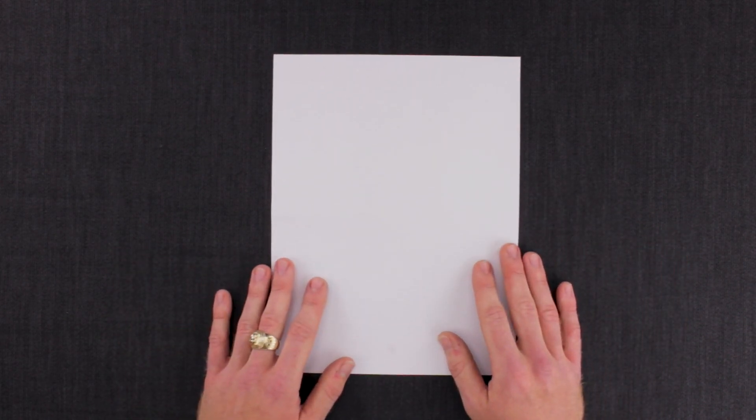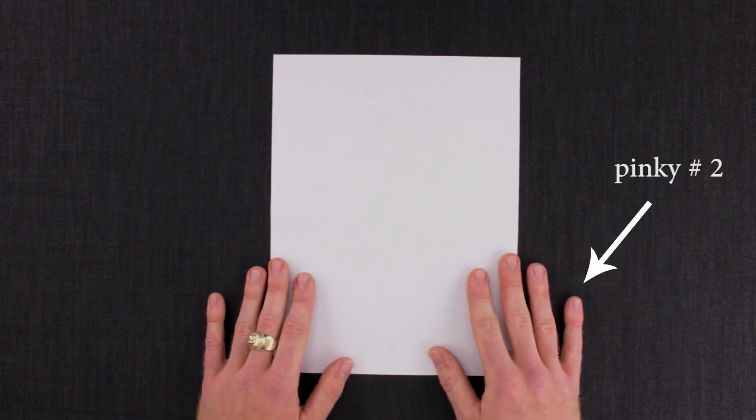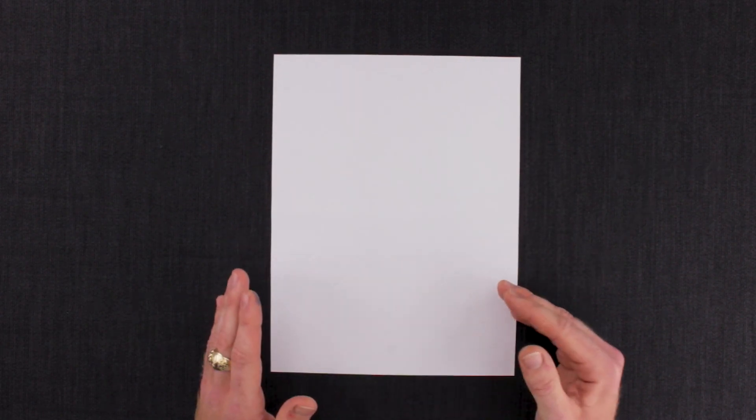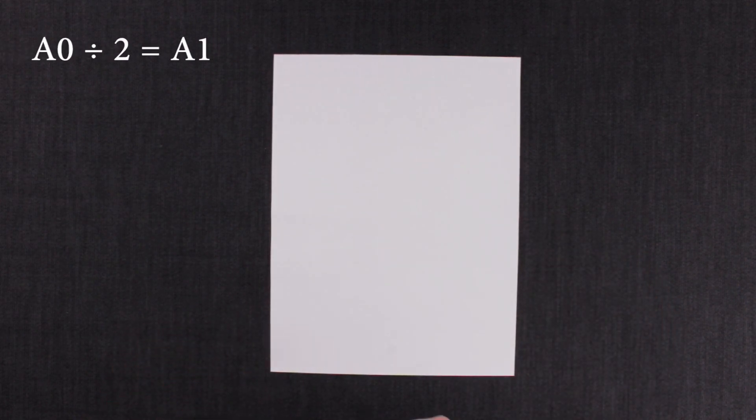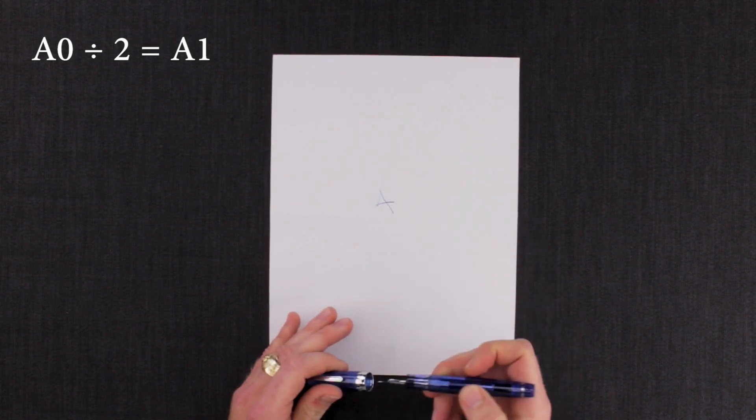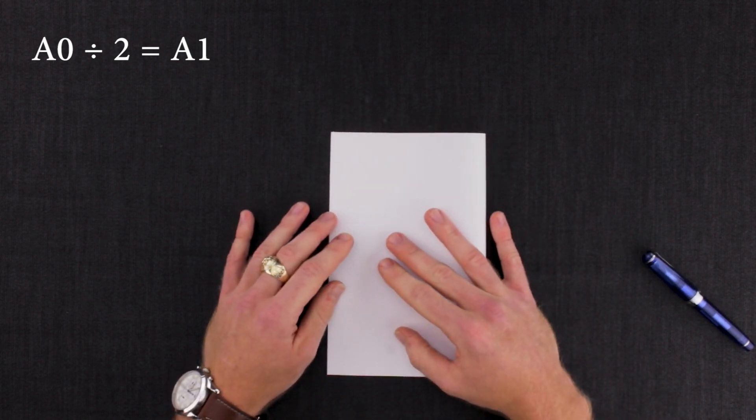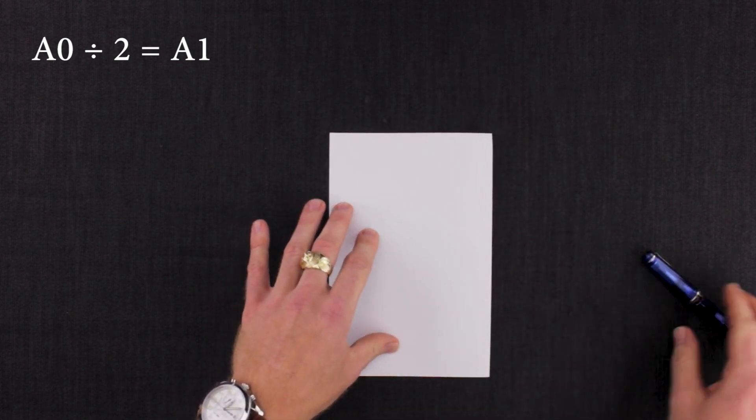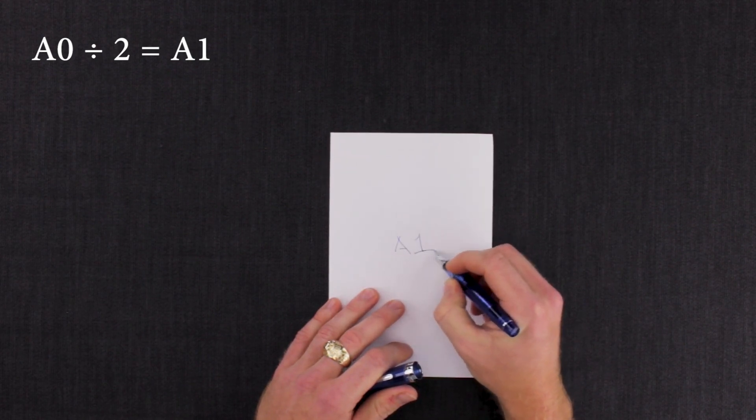So basically how that works is pretend this sheet of paper is your A0. For every other A size you're basically gonna fold that hamburger style. So if this is A0, then this is gonna be A1.